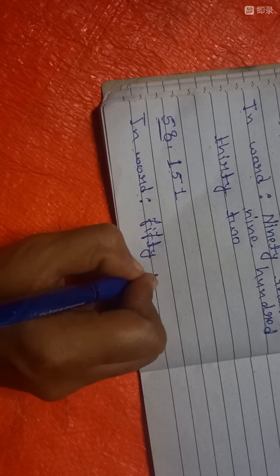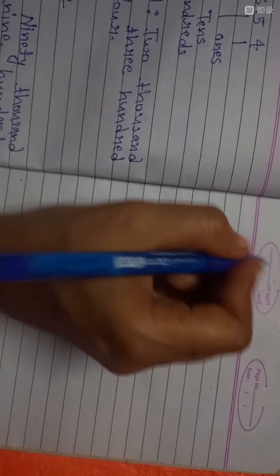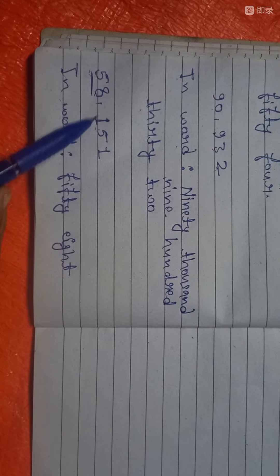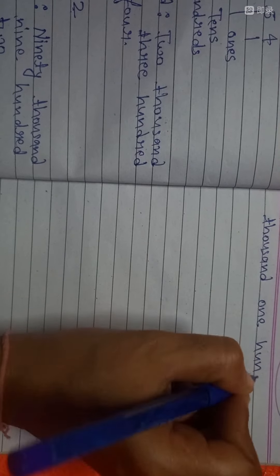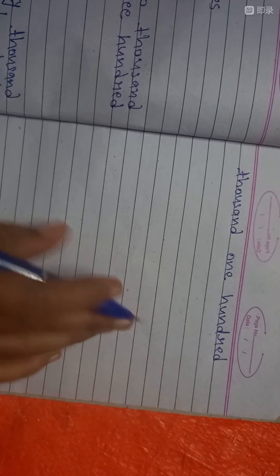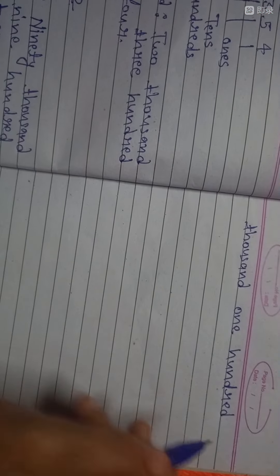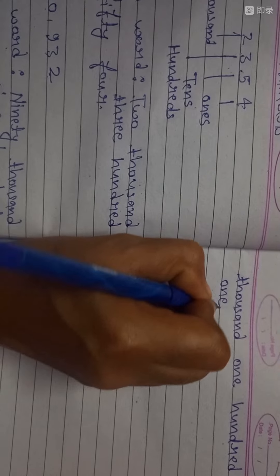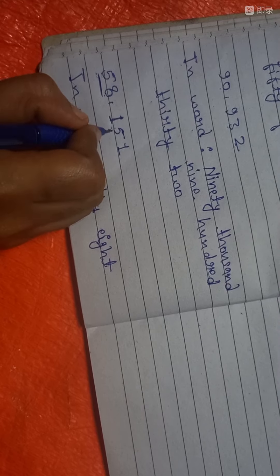Fifty-eight thousand, one hundred fifty-one. Because the tens position also takes two digits, so fifty-one. The full number is fifty-eight thousand, one hundred fifty-one.